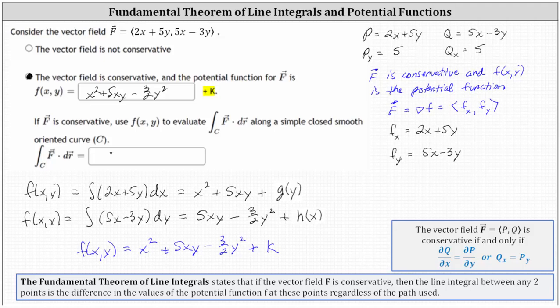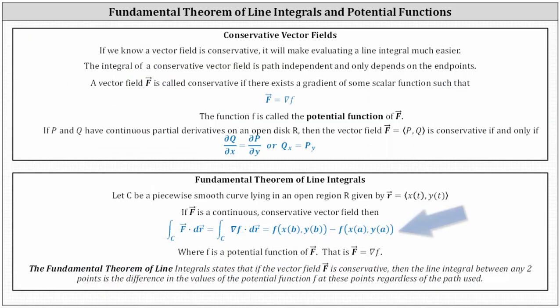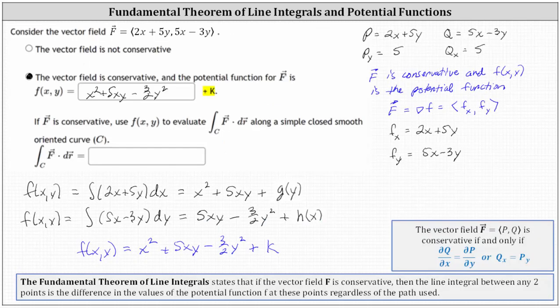For the second part, if the vector field F is conservative, we use the potential function f(x, y) to evaluate the line integral along curve C of F dot dr along a simple, closed, smooth, oriented curve C. Because we have a closed curve, the starting point and ending point are always the same. Therefore, when we determine the potential function values at both endpoints and find the difference, the difference is always zero. This is one of the properties of a conservative vector field when evaluating this line integral.